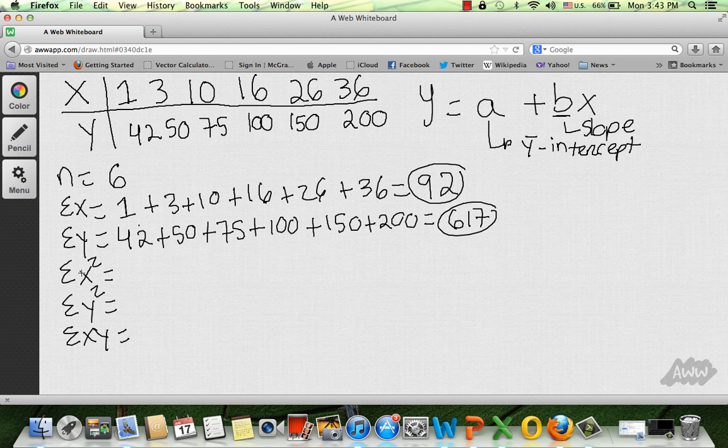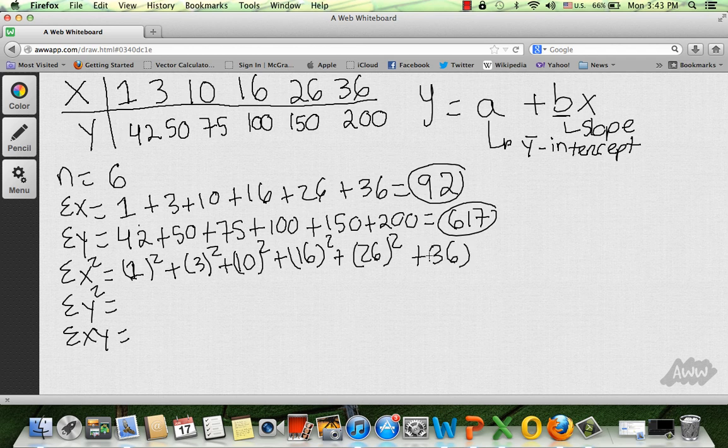Now we're going to do the sum of x squared. That means that you're going to square every single x and you're going to add it. So you have to do the square of 1 plus the square of 3 plus the square of 10 and so on. Just put it in parentheses, so you do 1 squared. And then even if you have negative numbers, they're going to become positive. So you're going to do 1 squared plus 3 times 3 plus 9 plus 100 plus 256 and so on. And that has to give you 2338.